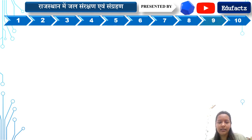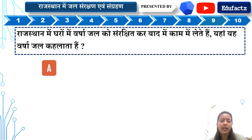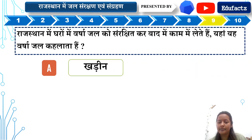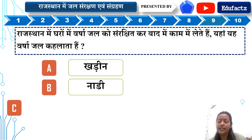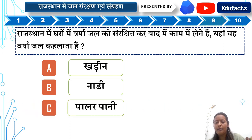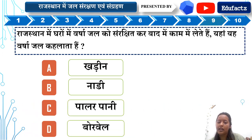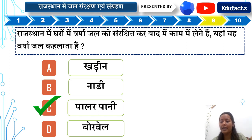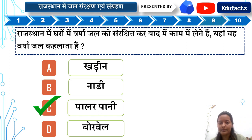Question number 9: Rajasthan mein gharon mein varsha jal ko sanrakshit karke baad mein kaam mein lete hain — yeh varsha jal kya kehlata hai? A — Kundin, B — Nadi, C — Palar Paani, D — Borewell. Iska right answer is Option C — Palar Paani. Gharon mein jab varsha hoti hai tab jo paani sangrahit kiya jaata hai use Palar Paani kehte hain.